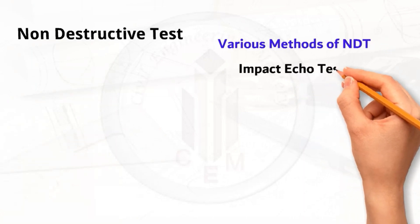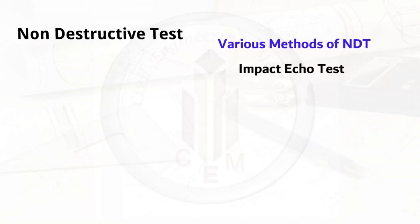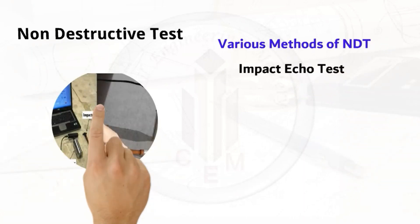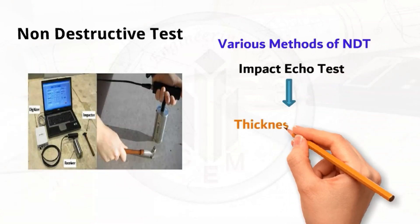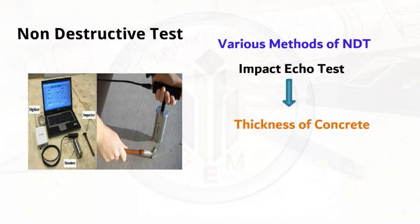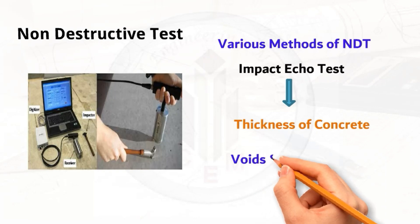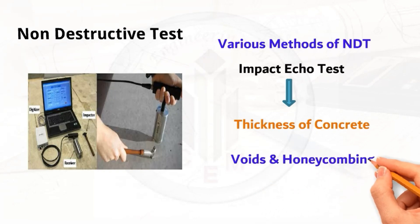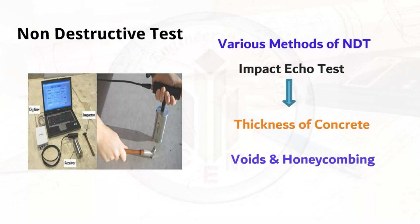The next test is the impact echo test. This test is mainly used to determine concrete thickness, and also to find out defects such as voids, honeycombing, delamination, and debonding in plain and reinforced concrete structures, as well as post-tensioned concrete structures.